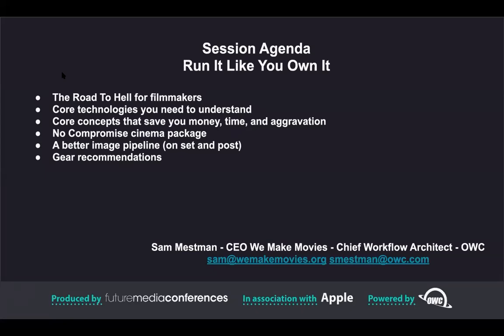They'll typically spend anywhere from $15,000 to $25,000 on a sound mix. For color correction, the director finds a deal with a post house who will work at a lower rate than they'd charge a studio. All they need to do is bring in the movie at the end and the post house will handle it. What could go wrong? They go off and shoot a 15-day, 30-location shoot.